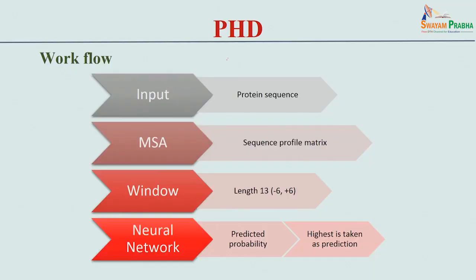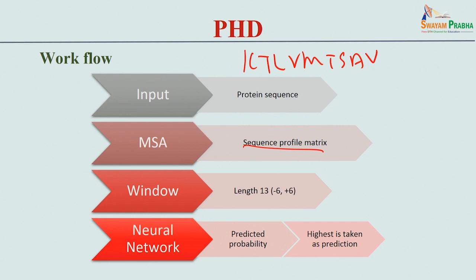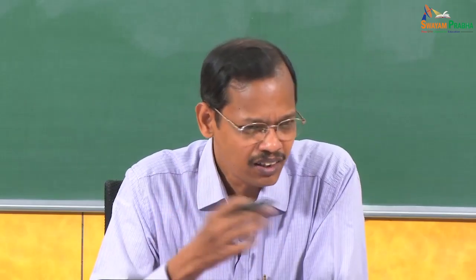Here is how it works: take the input sequence, get the multiple sequence alignment, and identify preferred residues at each position. Then apply a window length - for example, a window of 13 spanning minus 6 to plus 6 - taking all that information and feeding it into machine learning. For example, in a neural network, it gives you the probability of each residue being in helix, strand, or coil. Taking 3 states, it outputs probabilities: helix 0.5, strand 0.2, coil 0.1.